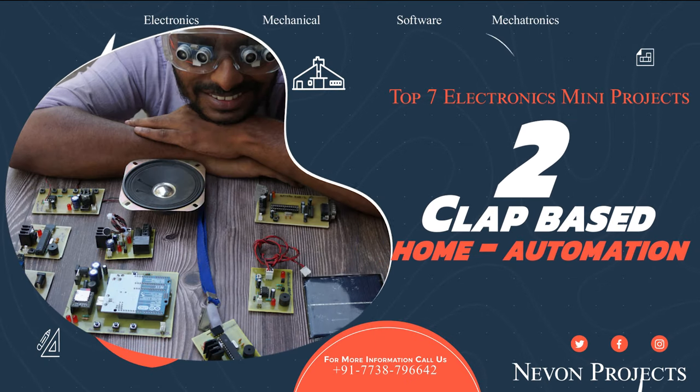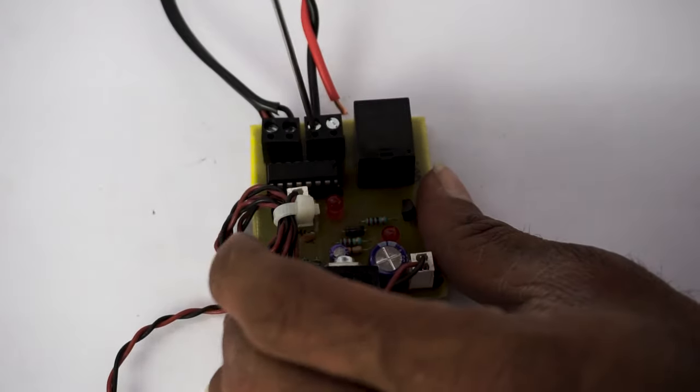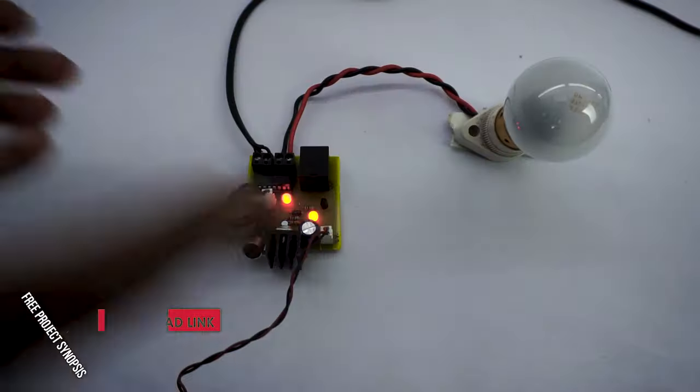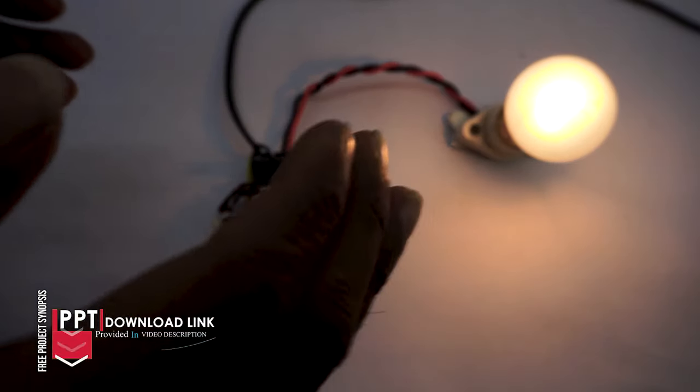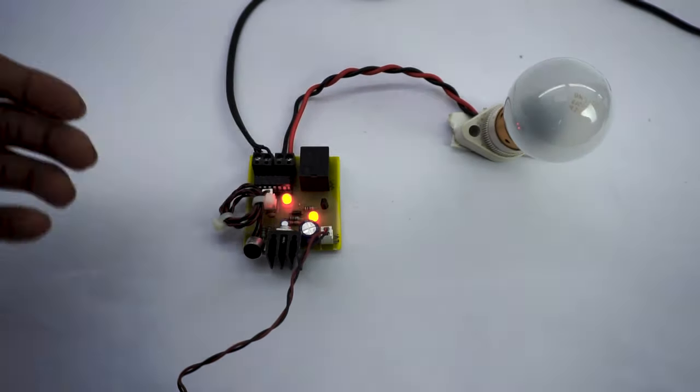Clap based home automation. This is a small system that shows you a demo of home automation and you can control any load or appliance using just a clap. Here is a light bulb and microphone which are used to develop the system. Based on the clapping, it will switch the load on or off.